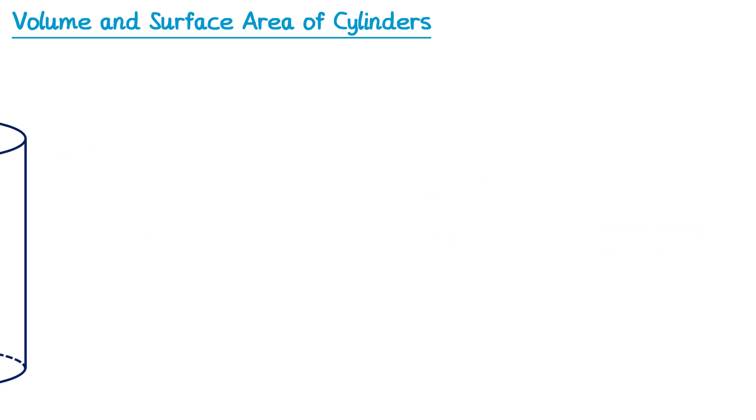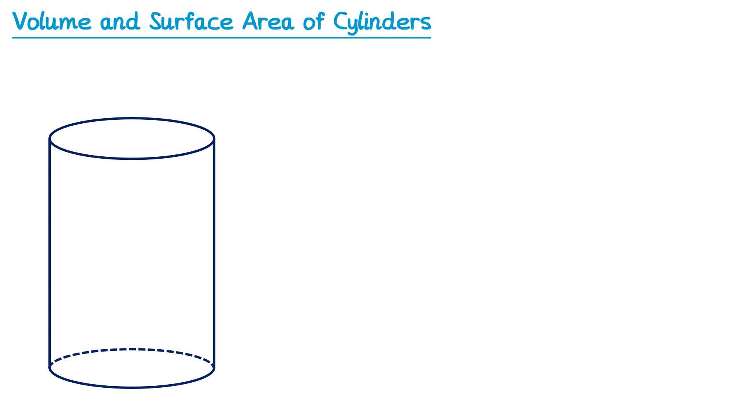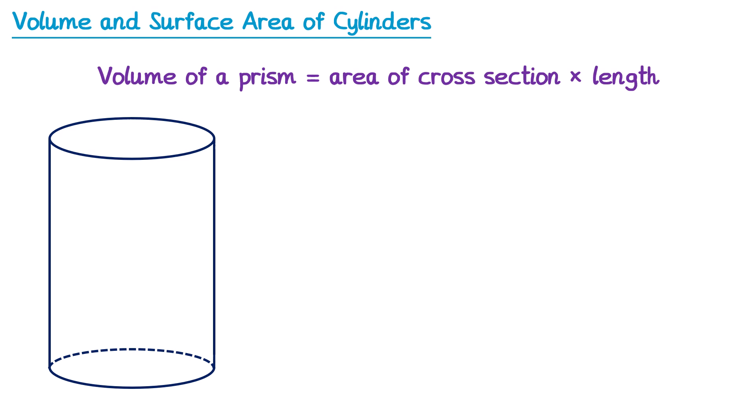So let's take a cylinder and we'll begin by looking at its volume. In the previous video we learnt to find the volume of a prism: you do the area of the cross section multiplied by the length. Now whilst the cylinder isn't technically a prism, you can think of it as a prism where the cross section is a circle. If this were the cross section, then this would be the length. But for a cylinder we don't tend to call it length — we call it the height, due to how we draw the cylinder.